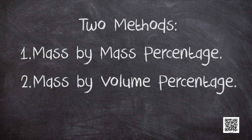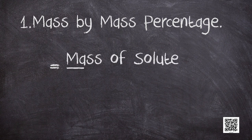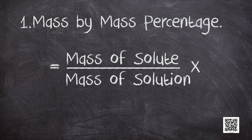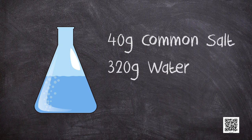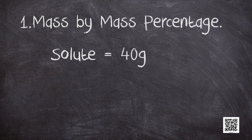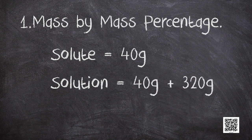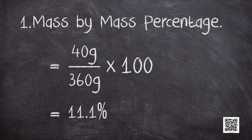The concentration of a solution in terms of mass by mass percentage is calculated as the mass of the solute divided by the mass of the solution, multiplied by 100. For example, if a solution contains 40 grams of common salt and 320 grams of water, the mass of the solute is 40 grams and the mass of the solution is 40 plus 320, giving a total of 360 grams. Hence, 40 divided by 360 multiplied by 100 gives 11.1% concentration.